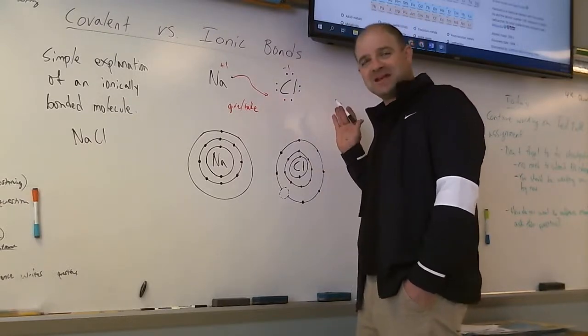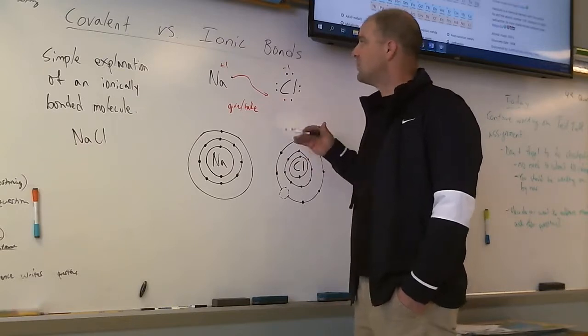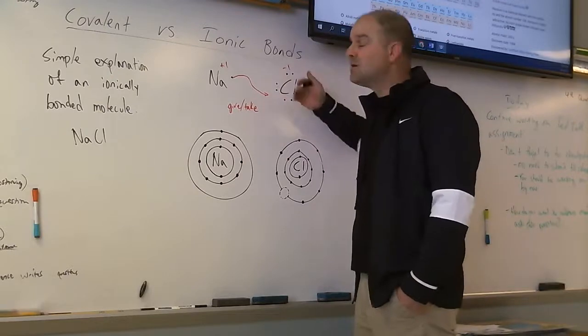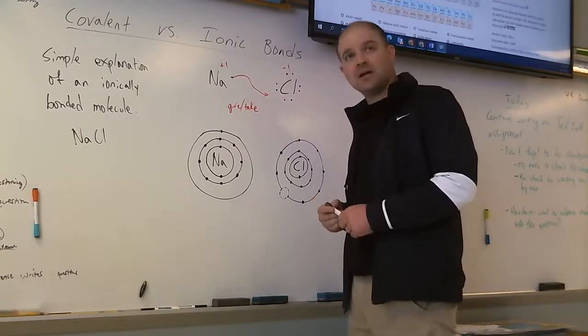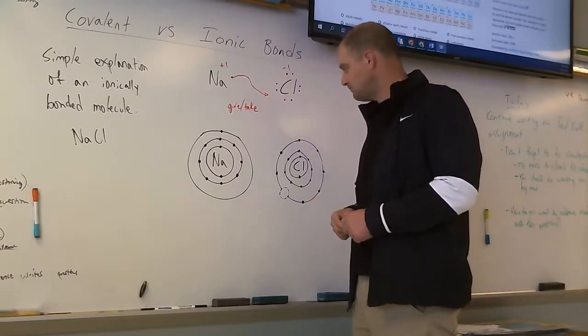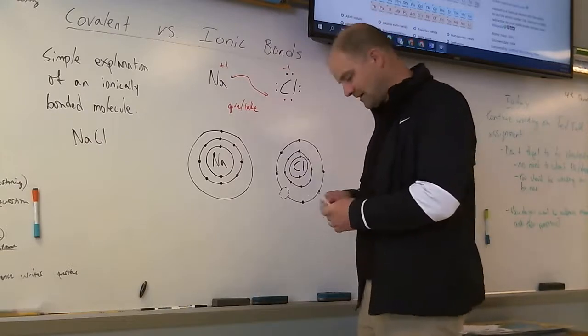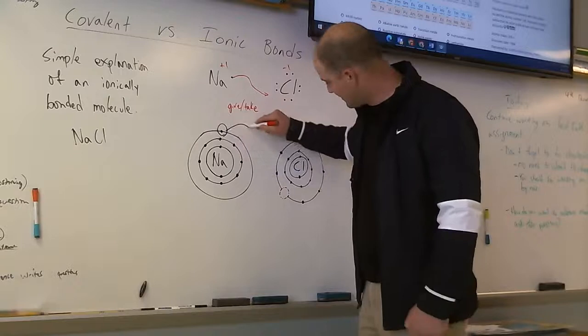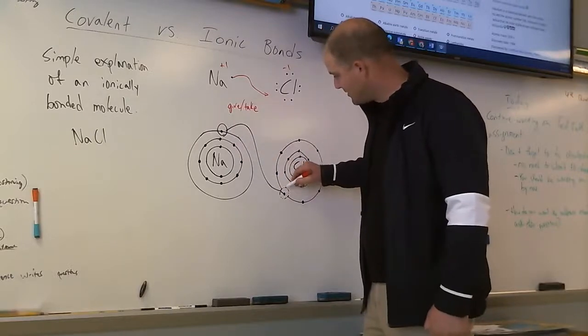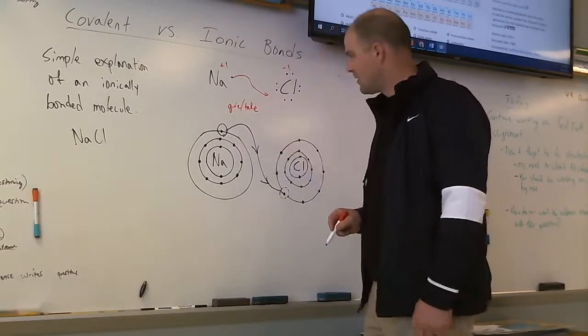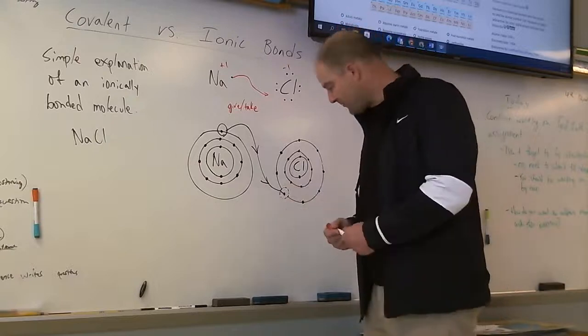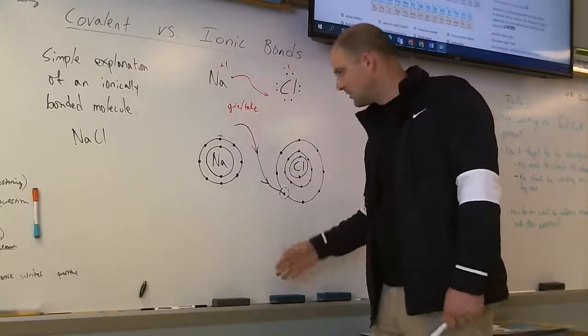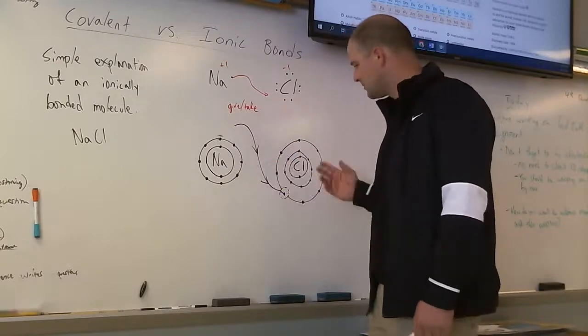So in many cases opposites attract, so we would have an ion of chlorine bonding ionically with an ion of sodium. And then to show that down here in my Bohr model, you'd just be removing this guy and putting it right there going that way.